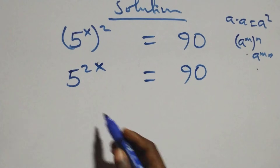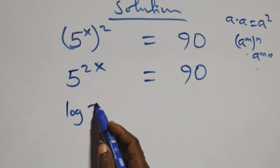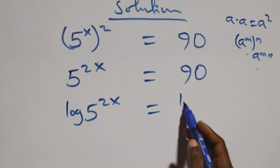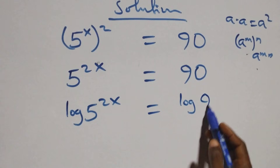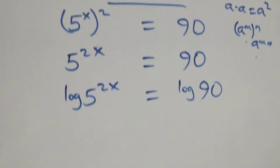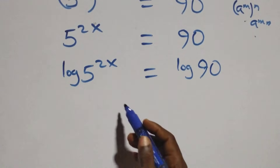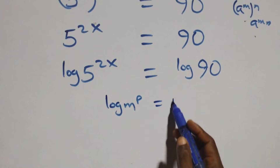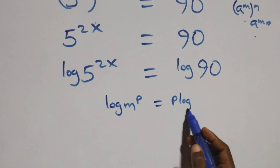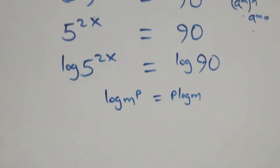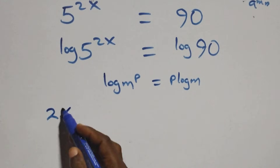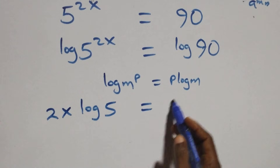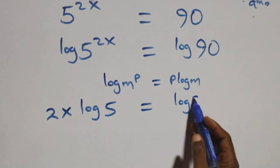Then here we take the log on both sides. We have log of 5 raised to power 2x equals log 90 on this side. Then we apply the power rule of logarithms: when we have log n raised to power p, this is the same thing as p log n. So here we have 2x log 5 equals log 90.